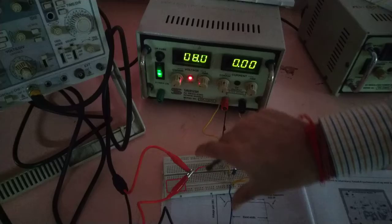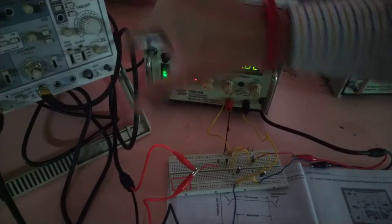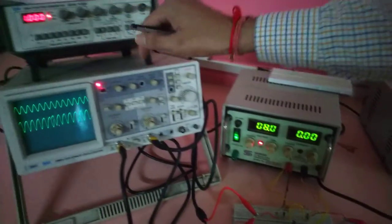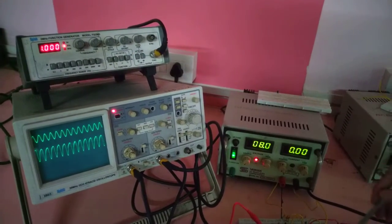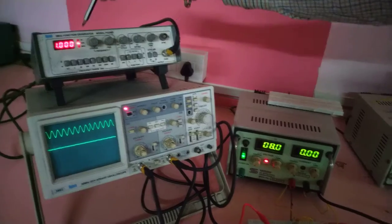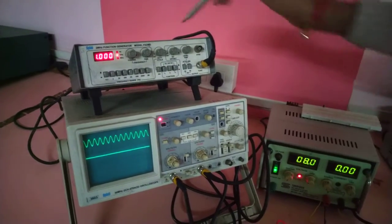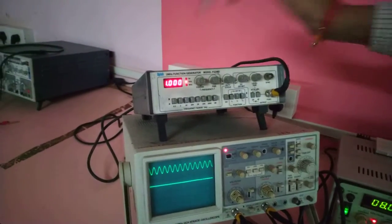So here we are applying the input from function generator of 20 millivolt peak to peak. The first channel we are observing the input voltage on first channel of CRO generated from function generator. Right now it is set at 1 kilohertz frequency.